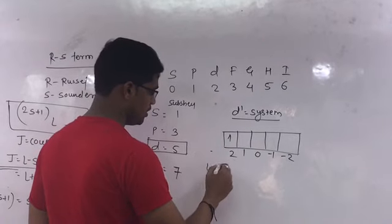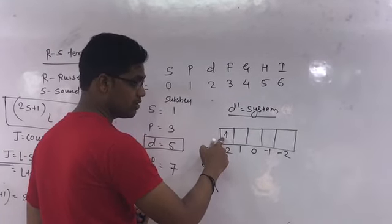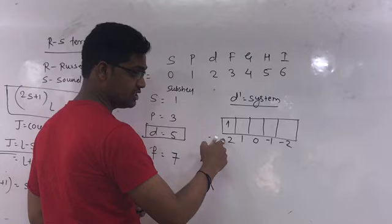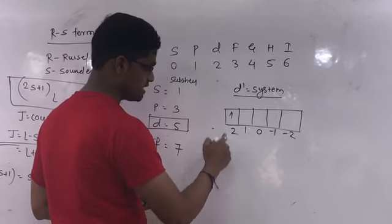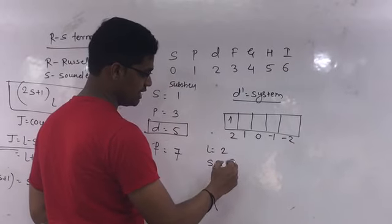Now, calculate the L value. Here 1 electron, so 1 electron is at 2. So L is equal to 2. Now S, S means spin value. 1 electron is half.